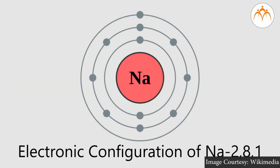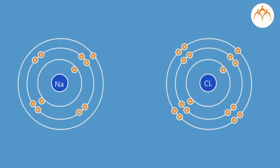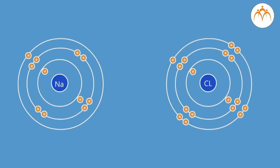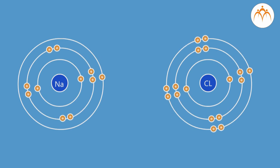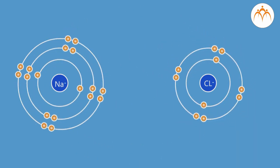The electronic configuration of Na is 2, 8, 1 and the electronic configuration of Cl is 2, 8, 7. There are two ways in which Na and Cl can complete their octet. Na could accept seven electrons to reach 2, 8, 8, or Cl could donate seven electrons.